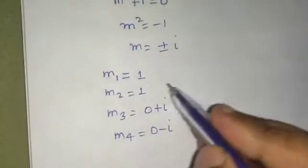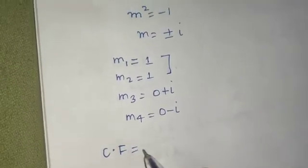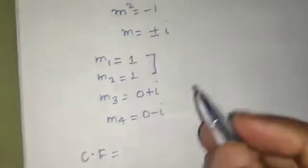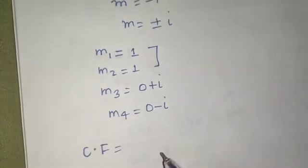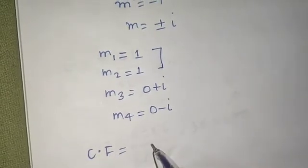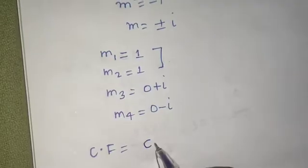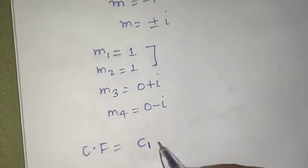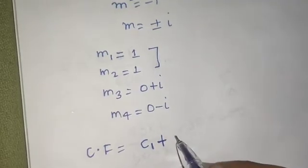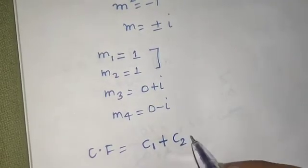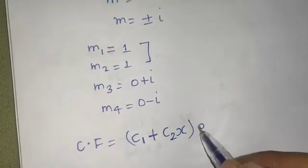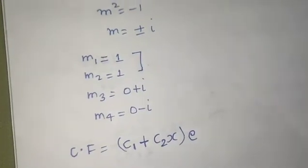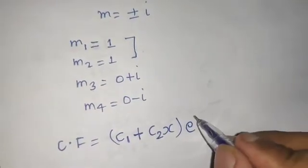Now, m₁ and m₂ are repeated roots. For repeated roots, the complementary function is written as: (c₁ plus c₂ x) times e to the power m₁ x — since m₁ and m₂ are both equal to one, this gives (c₁ plus c₂ x) e to the power x.